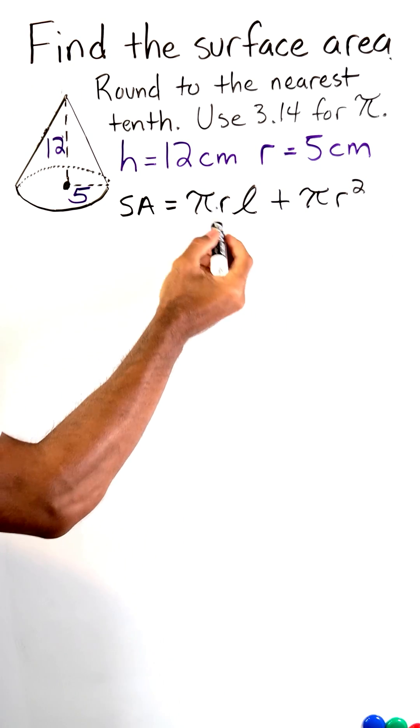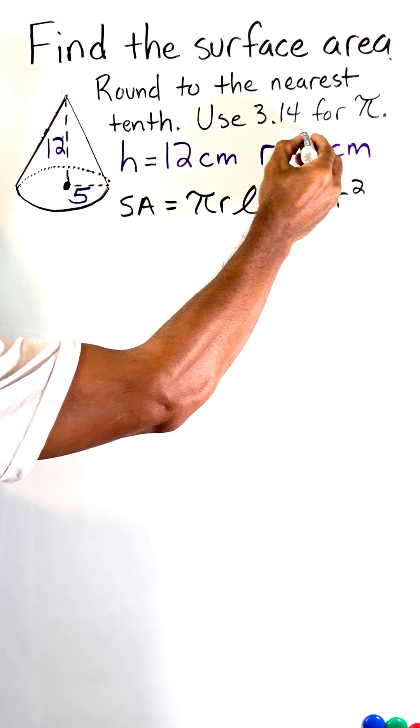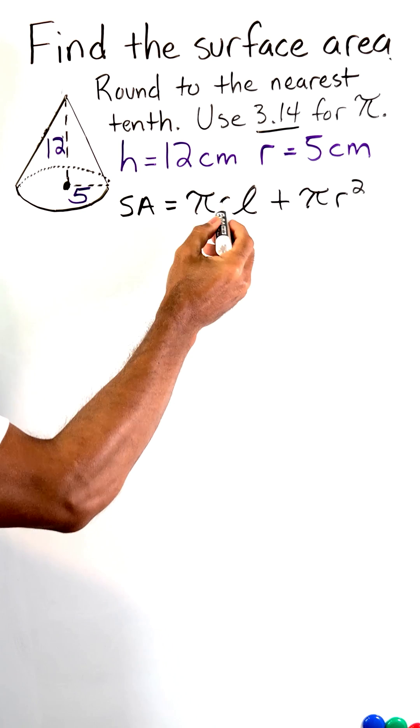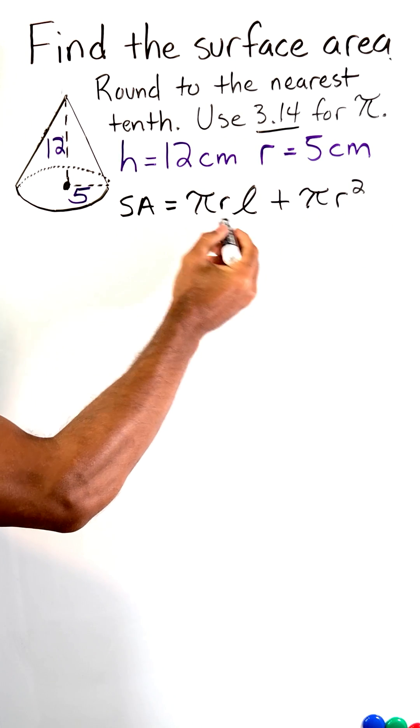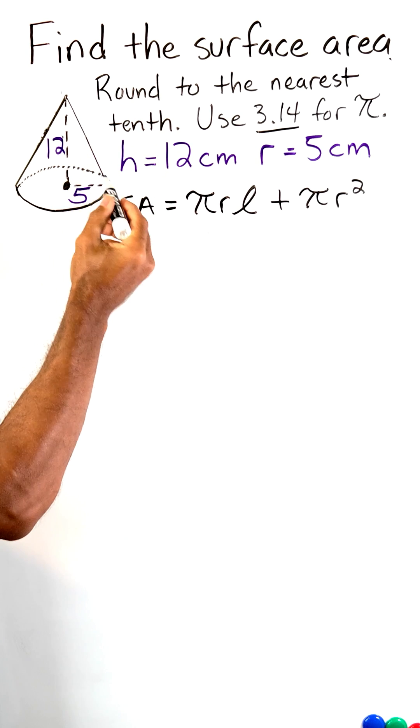So what we have to do is substitute pi with 3.14 and we have to substitute the radius with a given radius of five centimeters. And the slant height is this distance right here, but it is not given.